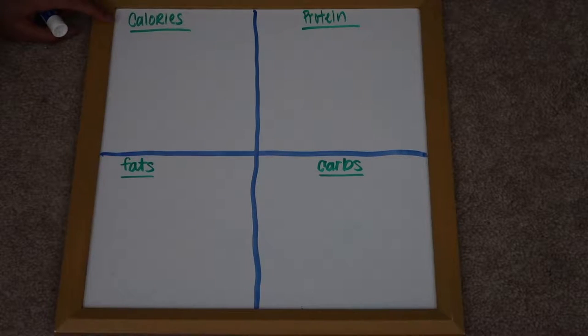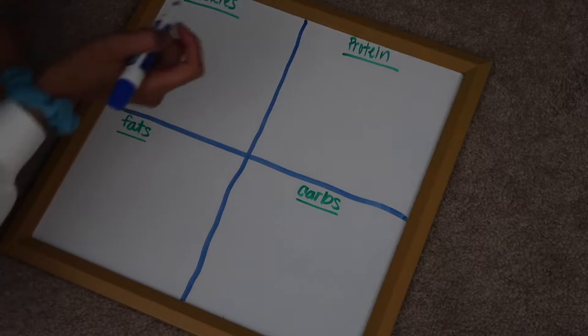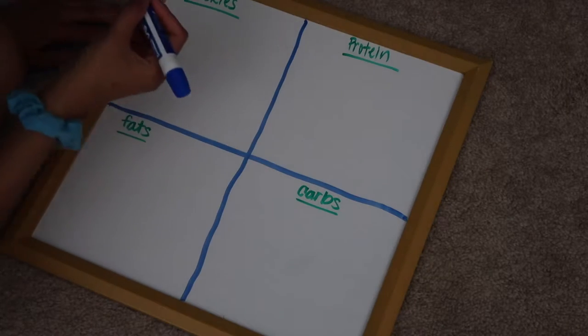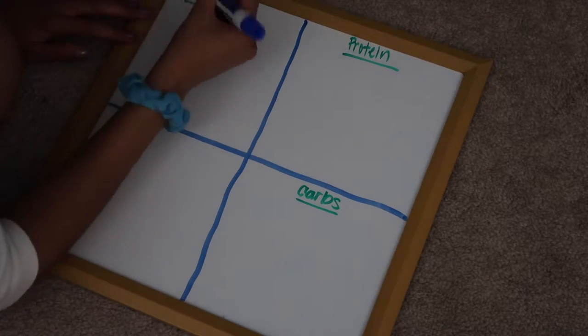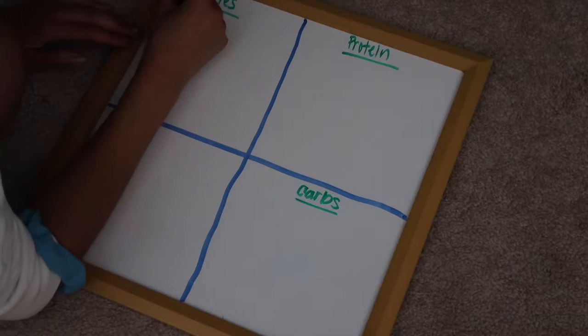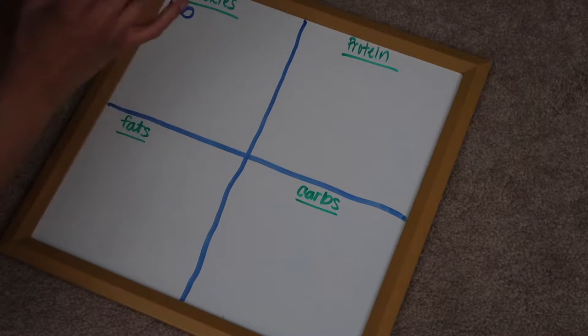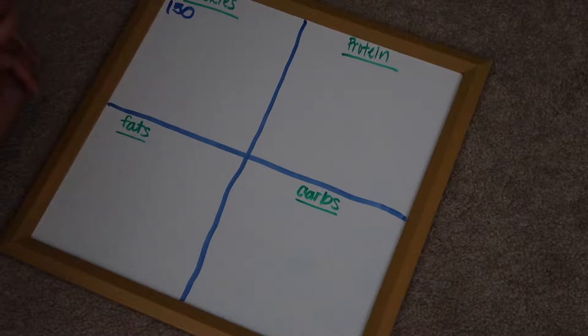So the first thing I'm going to write out and figure out with my calculations is my calories. You want to find out your maintenance calories, which is basically the amount of calories that you burn in a day while you're resting, while you're just not doing anything. So that's the first equation that I'm going to write out for you guys. So you're going to take your weight. My weight, I really, last time I weighed myself, I was around 152. So I'm just going to write 150 because I'm not 100% sure of my weight.